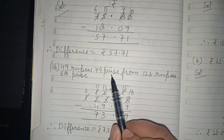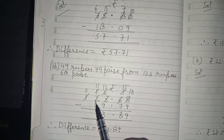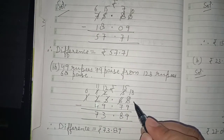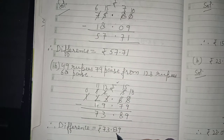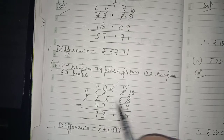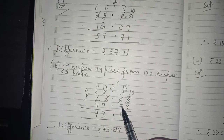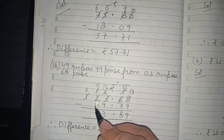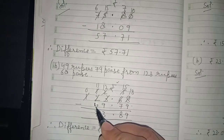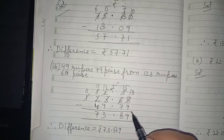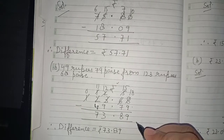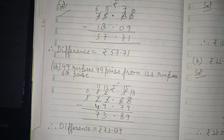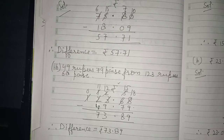Part b — 49 Rupees 79 Paisa from 123 Rupees 68 Paisa. Whatever is written after 'from' is greater and goes on top. Write the symbol rupee in common on the top, then 123.68 — 123 is rupees before decimal and 68 is paisa after decimal. Subtract 49.79 from it. After subtraction, the difference is Rupees 73.89. I hope you would have understood the exercise.